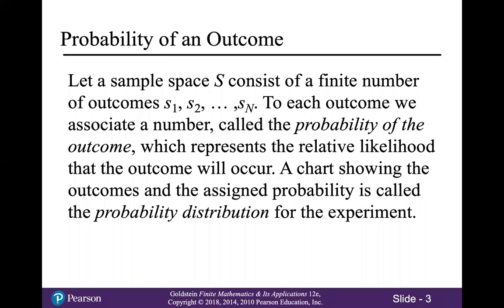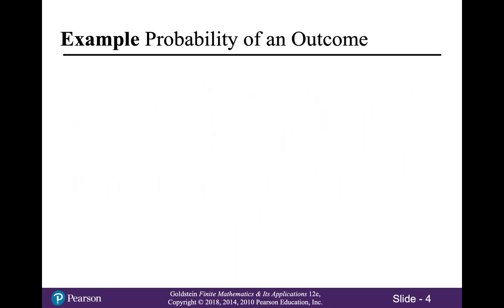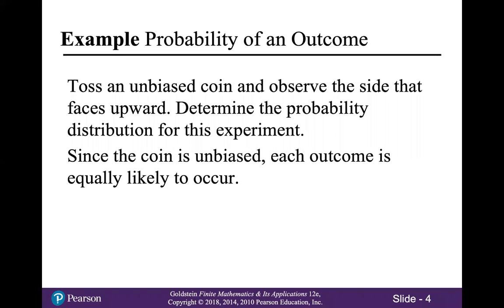Let a sample space S consist of a finite number of outcomes S1, S2, all the way up to S sub n. To each outcome, we associate a number called the probability of the outcome, which represents the relative likelihood that the outcome will occur. A chart showing the outcomes and the assigned probability is called the probability distribution for the experiment. For example, if you toss an unbiased coin and observe the side that faces upward, let's determine the probability distribution for this experiment.